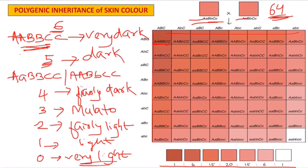You will see that this is the additive effect. So to summarize: there is one character — skin color — but three genes (A, B, and C) are responsible for controlling human skin color, each contributing additively to the phenotypic expression.